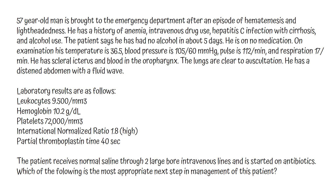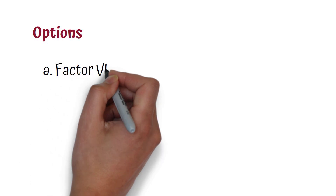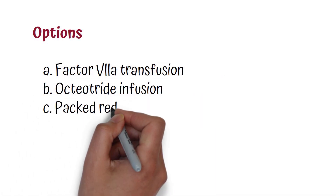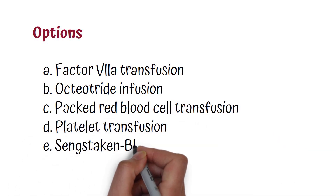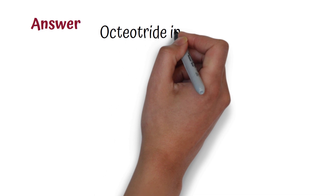The patient receives normal saline through two large-bore intravenous lines and is started on antibiotics. Which of the following is the most appropriate next step in the management of this patient? The options are: factor 7 transfusion, octreotide infusion, packed red blood cell transfusion, platelet transfusion, and Sengstaken-Blakemore balloon tamponade. The answer is octreotide infusion.